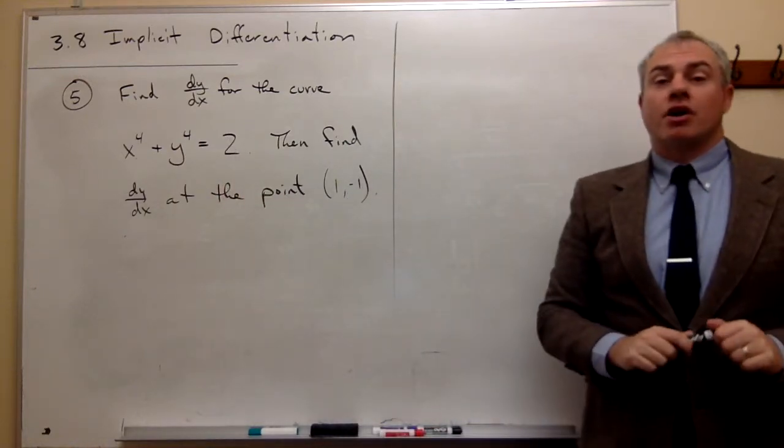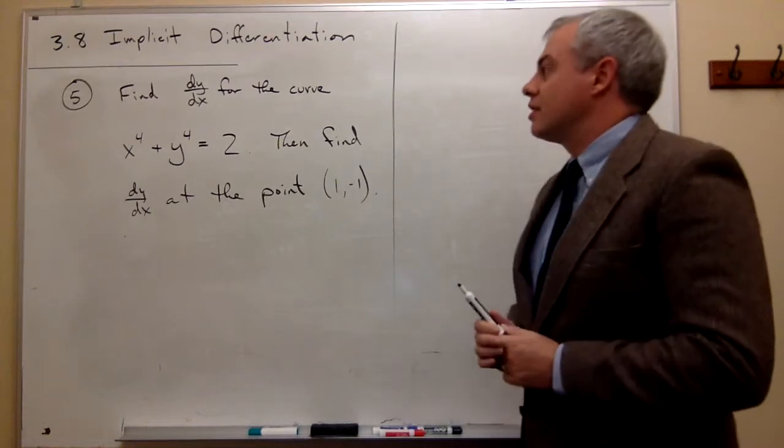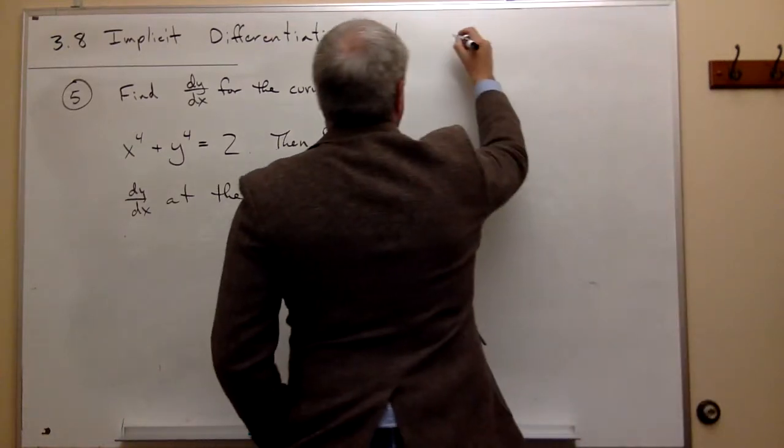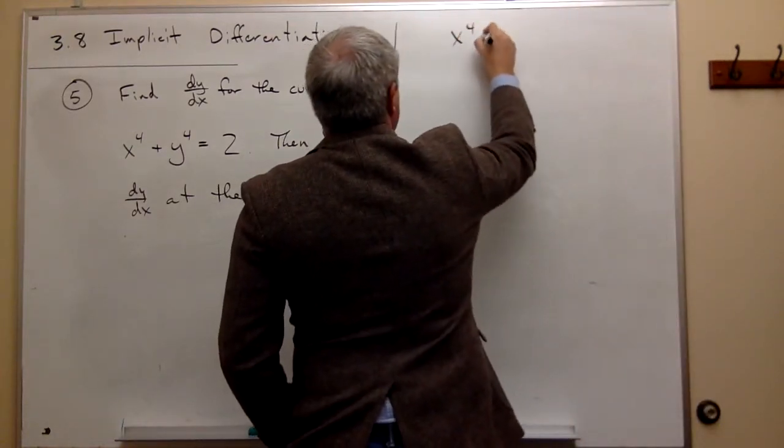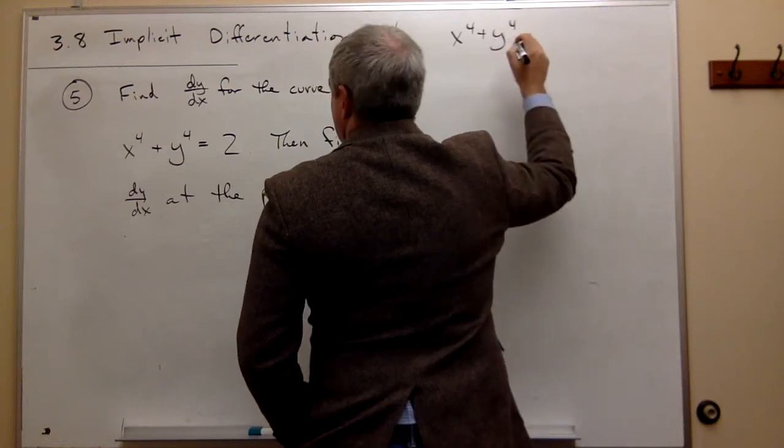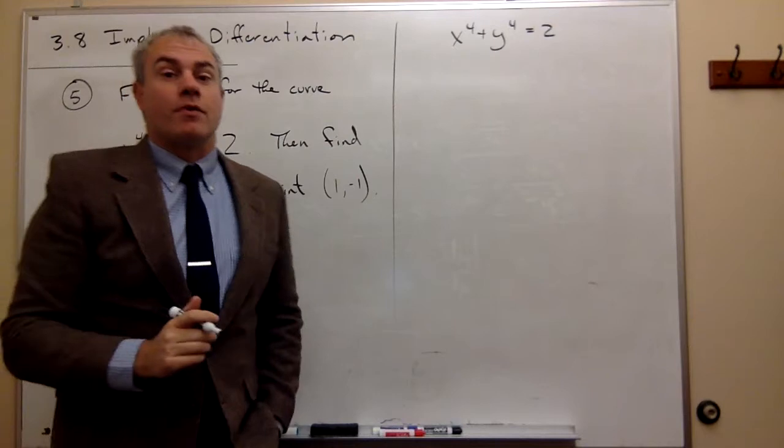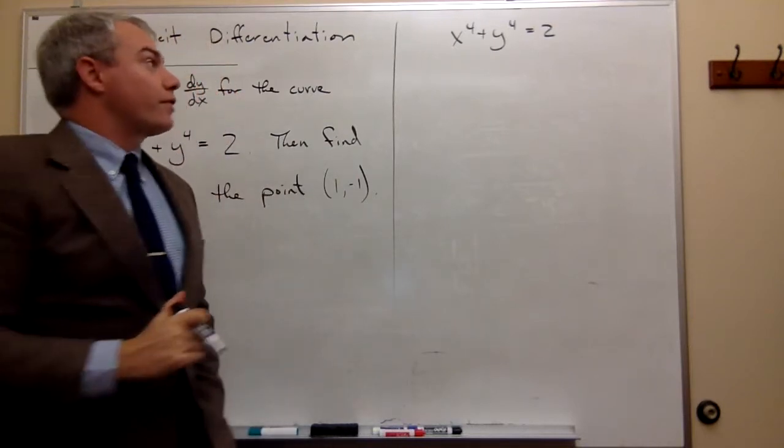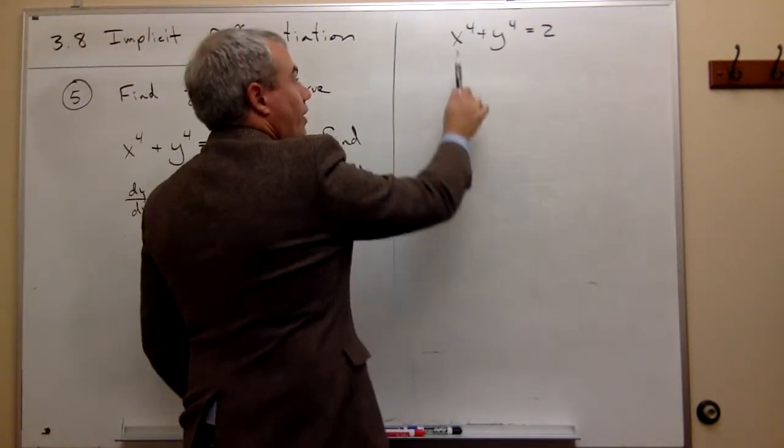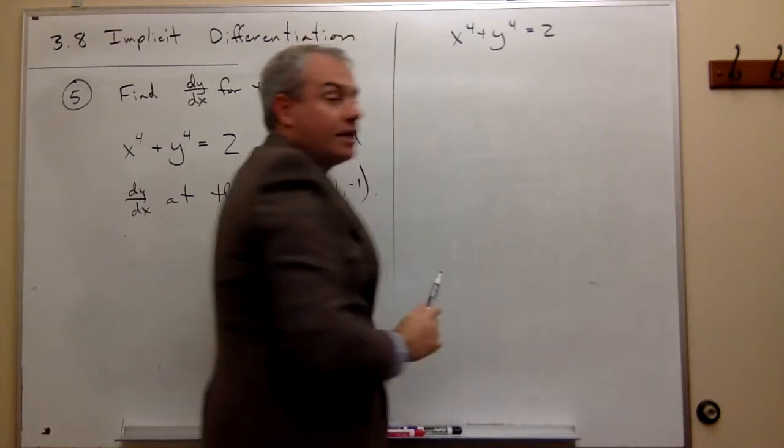Okay, so let's start out by finding dy/dx. So we know that we have the curve x^4 + y^4 = 2 and we want to find dy/dx for this curve. So the first thing we want to do is let's take the derivative of each of these pieces individually.